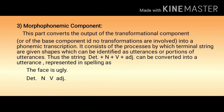The third section is the morphophonemic component. This component converts the output of the transformational component, or of the base component if no transformations are involved, into a phonemic transcription. It consists of processes by which terminal strings are given shapes that can be identified as utterances. For example, the string 'determiner plus noun plus verb plus adjective' can be converted into the utterance 'The face is ugly,' where 'the' is the determiner, 'face' is the noun, 'is' is the verb, and 'ugly' is the adjective.